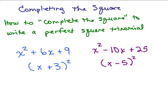I'm going to show you how to complete the square in this video to write perfect square trinomials. First, let me show you two perfect square trinomials. X squared plus 6X plus 9 is called a perfect square trinomial because it factors to X plus 3 squared. Another one is X squared minus 10X plus 25 because that factors to X minus 5 squared.